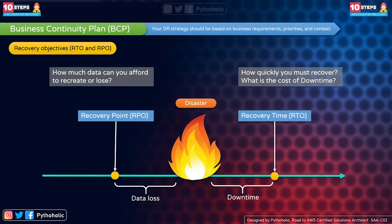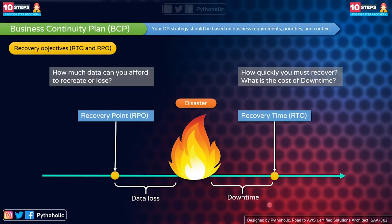The other objective is the Recovery Time Objective, or RTO. RTO is the maximum acceptable delay between the interruption of the service and the restoration of the service. If an organization defines one hour as the RTO, then within that time the service must be restored. This time frame is the acceptable window for service interruptions — how quickly you must recover and what is the cost of downtime. We'll discuss these in detail in steps 7 and 8.